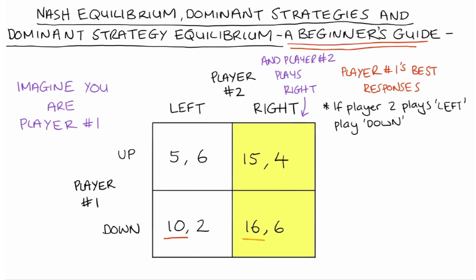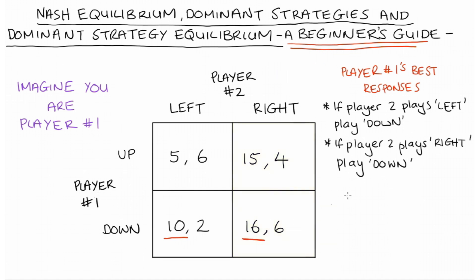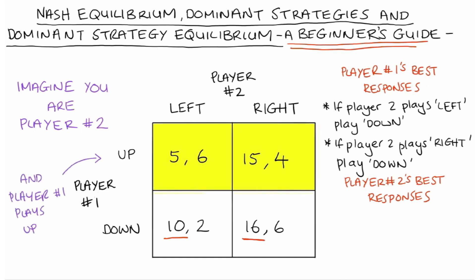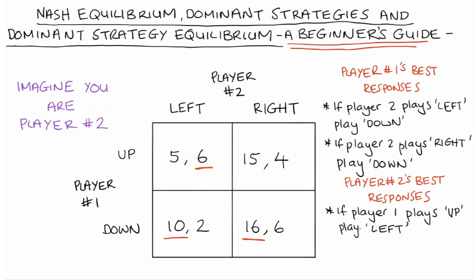So we've found player one's best responses to each of player two's possible strategies. Now let's think about player two's best responses. Imagine we're player two and player one plays up — we'd be on the first row. Player two could go left and get six, or right and get four. Six is greater than four, so player two's best response is to go left if player one plays up. If player one goes down, we're on the second row. Player two could go left and get two or right and get six — so right is the best response for player two to player one playing down.